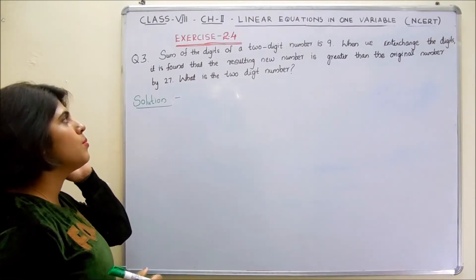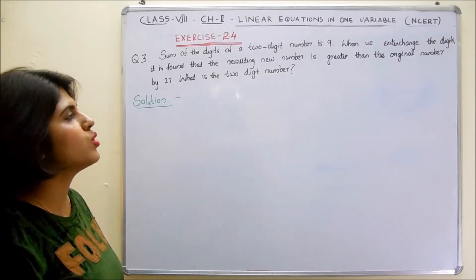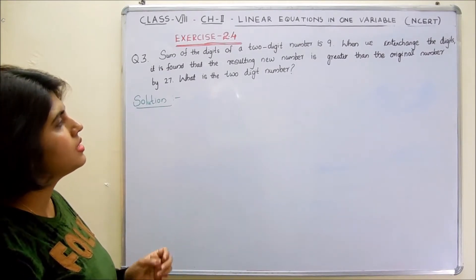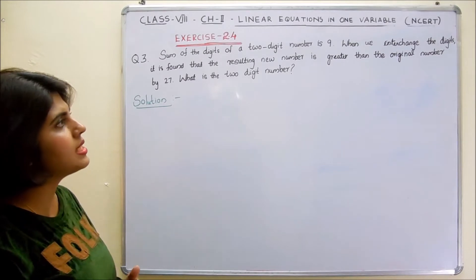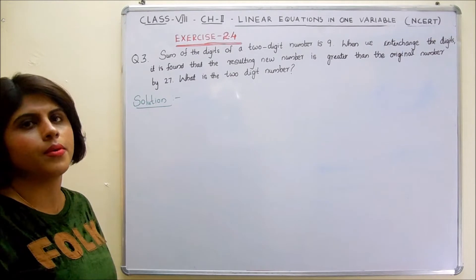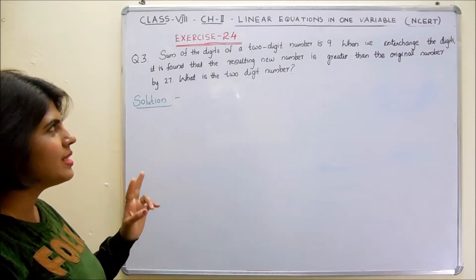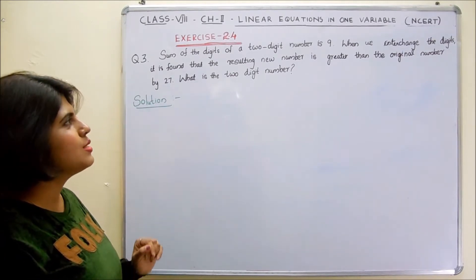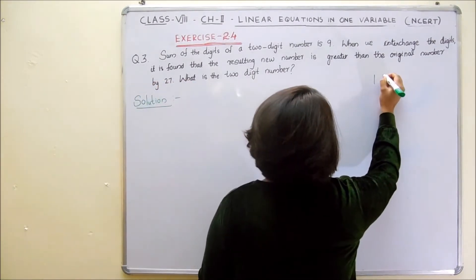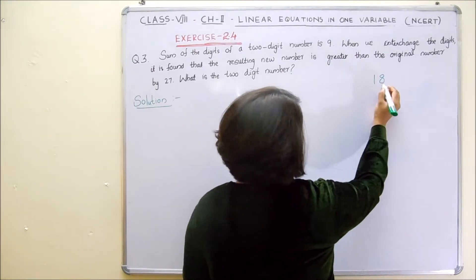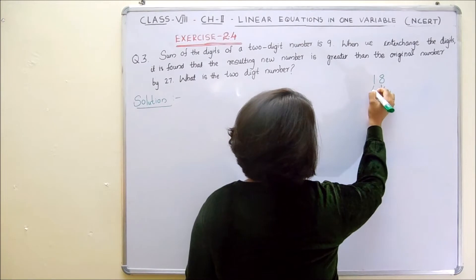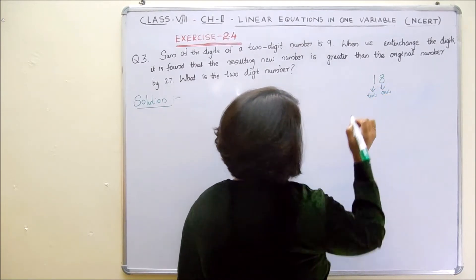The third question: Sum of the digits of a 2-digit number is 9. When we interchange the digits, it is found that the resulting new number is greater than the original number by 27. Then what is the 2-digit number? The question is a little bit confusing, so we can take one example: 18.